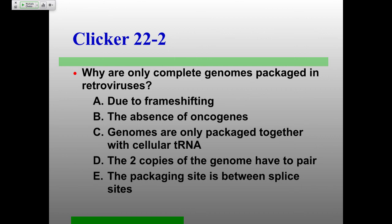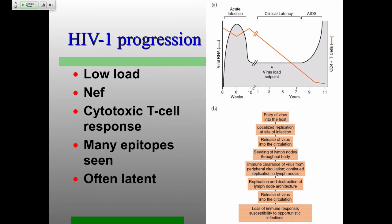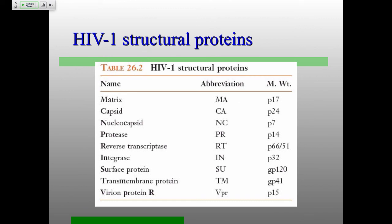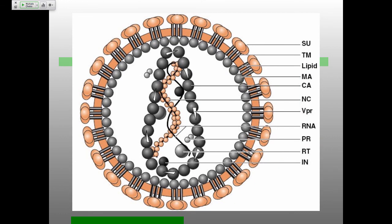Ten minutes to talk about HIV. I'm not going to talk about disease at all. I'm going to talk about the fascinating molecular aspects of HIV. The interesting structural proteins: major capsid, nucleocapsid, protease, reverse transcriptase, integrase, structural protein TM — all the same as other retroviruses — except for VPR. The structure is not an obvious icosahedron — it's this strange fullerene cone structure. But otherwise everything else is exactly the same.